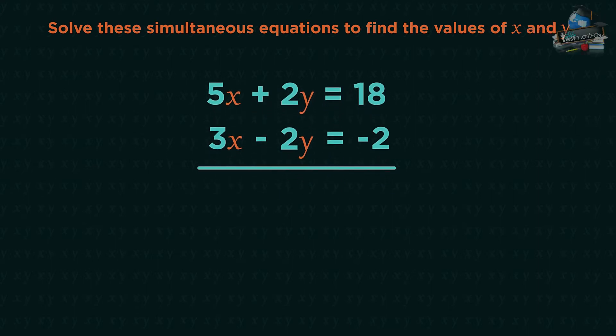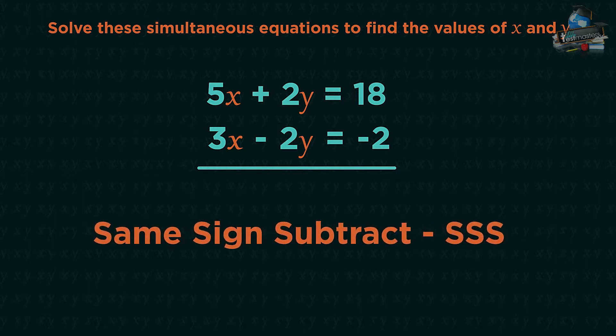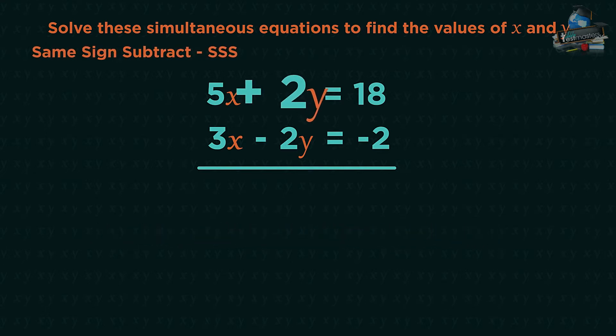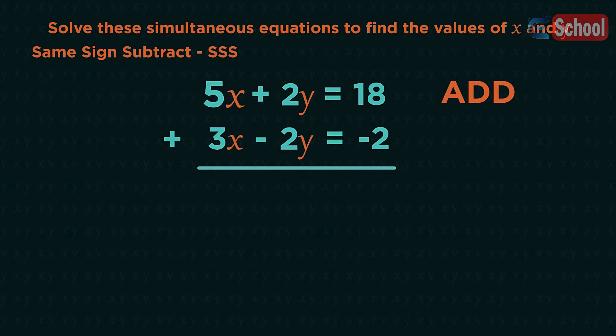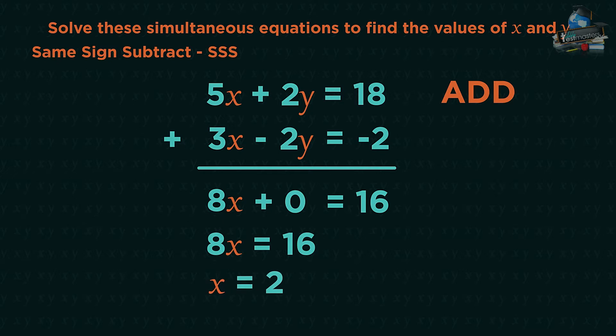We're going to either add or subtract the equations. Looking back at our matching two y's, if the signs are the same we subtract. Just remember same sign subtract, SSS. Here the signs are different, this one is plus 2y and the other is minus 2y, so we add the two equations. 5x add 3x is 8x. Plus 2y add minus 2y is 0, so we've eliminated the y's. 18 add minus 2 is 16, so 8x equals 16. Solve for x, so divide both sides by 8, and x is 2.